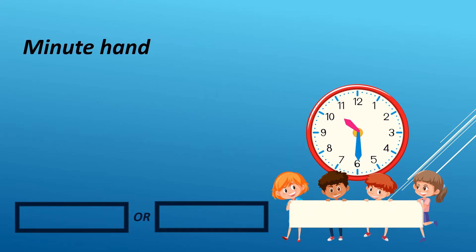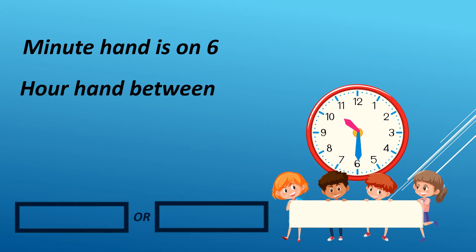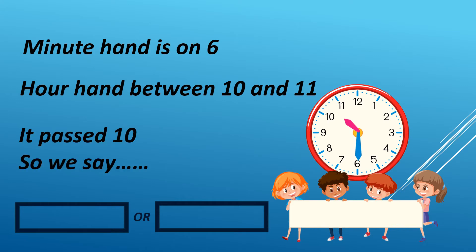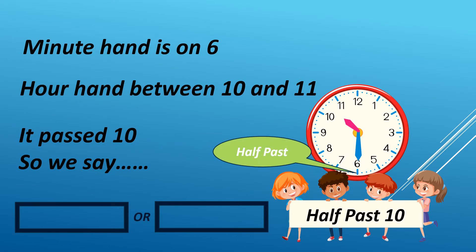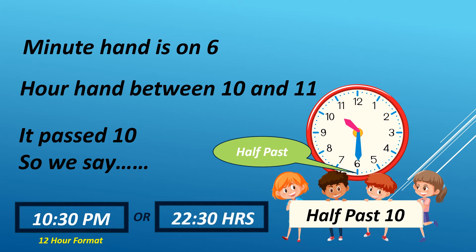When the minute hand is on 6 and the hour hand is between 10 and 11, it passed 10, so we say half past 10. It can either be AM or PM. For example, it is 10:30 PM in 12-hour format. We read it as 2230 hours in 24-hour format.